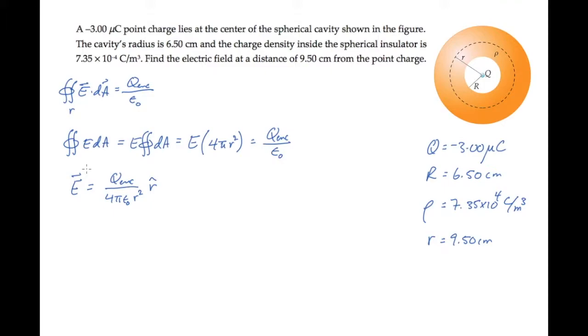We can now calculate the electric field if we know the enclosed charge. That charge comes from two contributions: the point charge Q at the center and the charge in the insulator. That is the charge in the hashed region I'll show here.